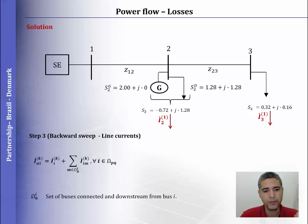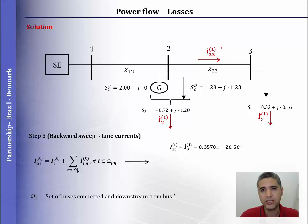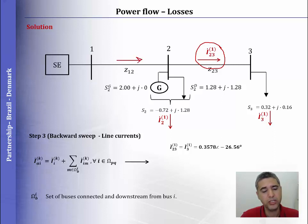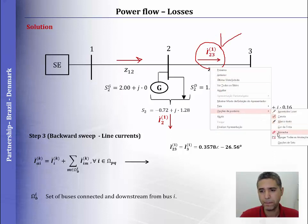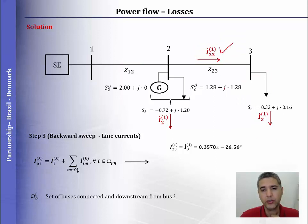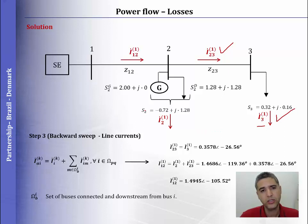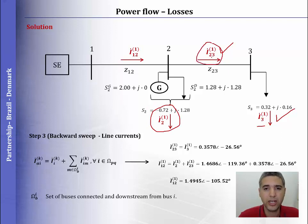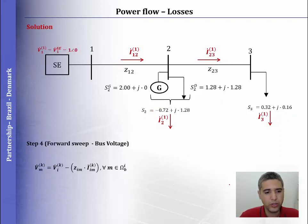Still in the backward sweep, we need to compute the current through each line. The first current to calculate is from bus 2 to bus 3, because to compute the current from bus 1 to 2, we need the current through line 2 to 3. The current from 2 to 3 has the same value as the current at node 3, and then the current from 1 to 2 is the sum of the current at node 2 and the line 2 to 3 current.